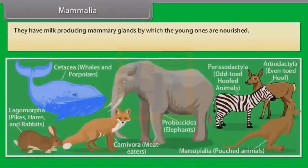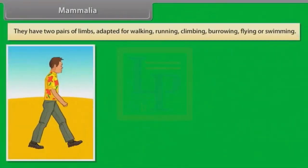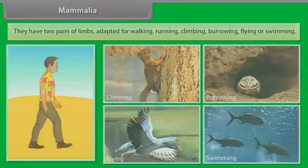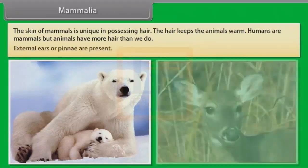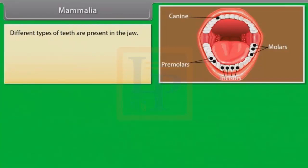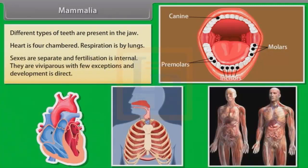Mammalia: Mammals have milk-producing mammary glands by which the young ones are nourished. They are homeothermous, that is, warm-blooded. They have two pairs of limbs adapted for walking, running, climbing, burrowing, flying or swimming. The skin of mammals is unique in possessing hair, which keeps the animals warm. External ears or pinnae are present. Different types of teeth are present in the jaw. Heart is four-chambered. Respiration is by lungs. Sexes are separate and fertilization is internal.